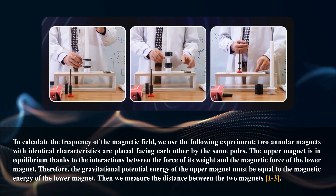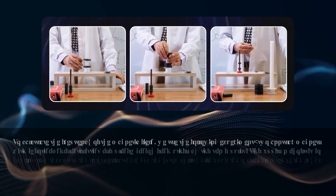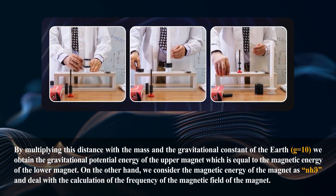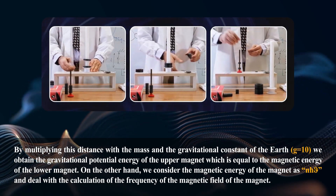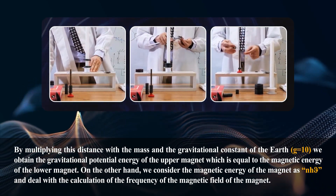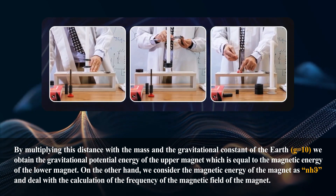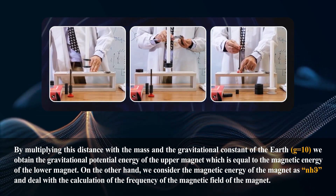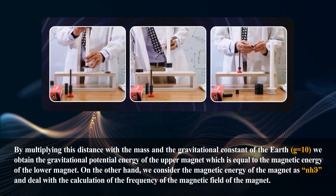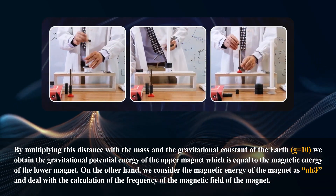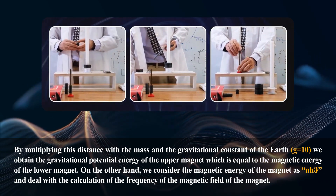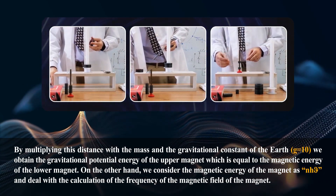We measure the distance between the two magnets. By multiplying this distance with the mass and the gravitational constant of the Earth (g = 10), we obtain the gravitational potential energy of the upper magnet, which is equal to the magnetic energy of the lower magnet. We consider the magnetic energy of the magnet as NHDν and proceed with the calculation of the frequency of the magnetic field of the magnet.